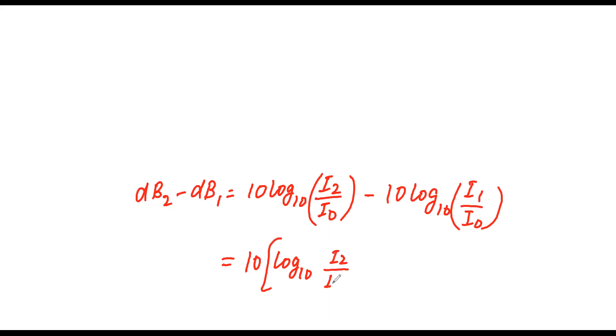dB2 minus dB1, what will happen? 10 log to the base 10, I2 by I naught, minus 10 log to the base 10, I1 by I naught. 10 is common, log to the base 10 is common. Log a minus log b equals log a by b. So I2 by I naught divided by I1 by I naught. I naught cancels. This means 10 log to the base 10, I2 upon I1.